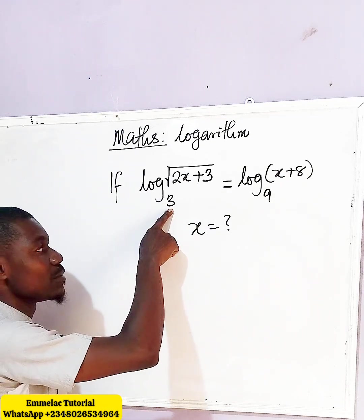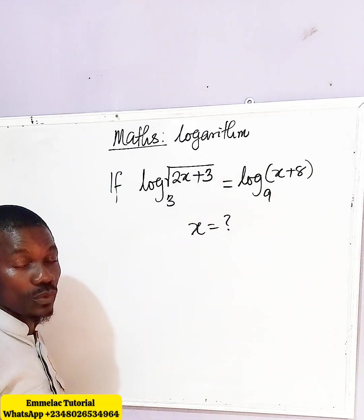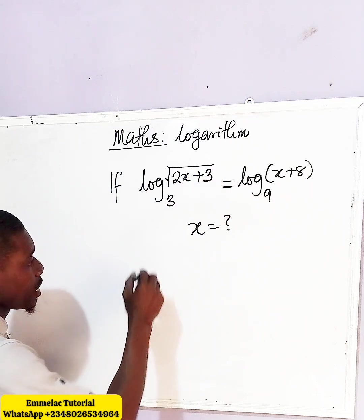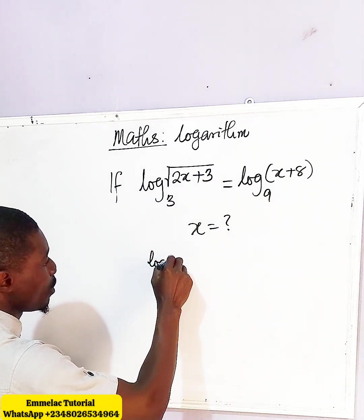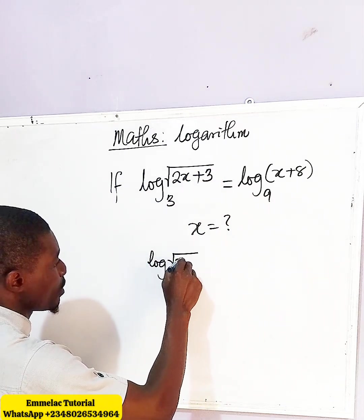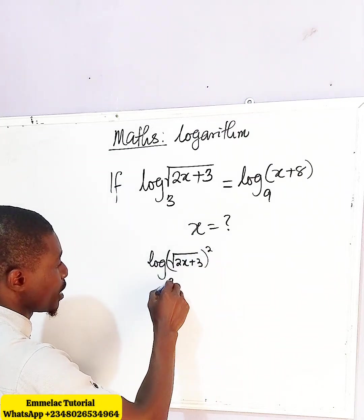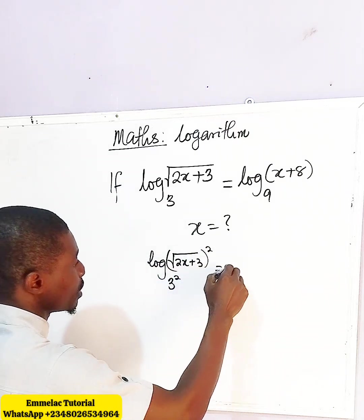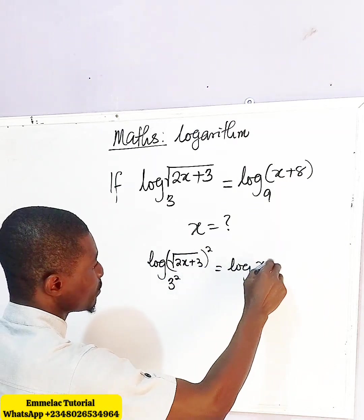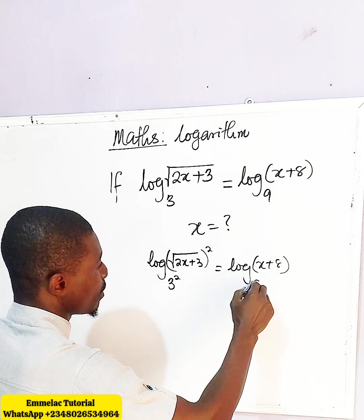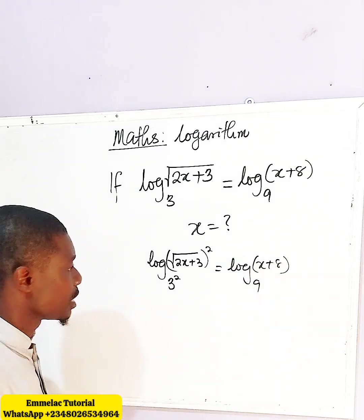Raise both the base and the argument to the power of 2. So we have log of 2x plus 3 raised to the power of 2, then 3 raised to the power of 2, equals log x plus 8 base 9.